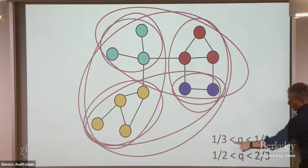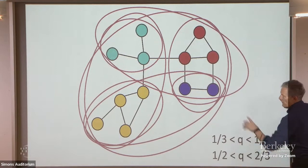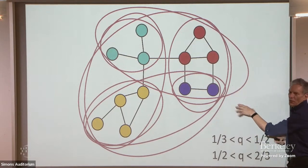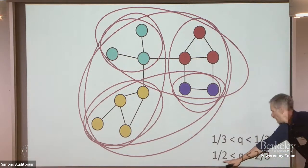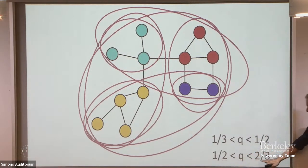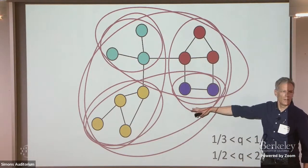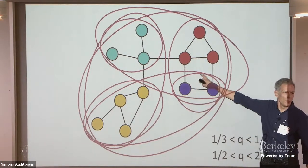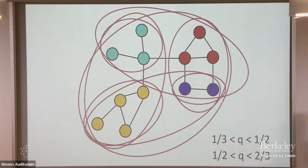For q equals 0.4, you get one set of communities. It turns out that for any q between one third and a half — right at a half, things can go haywire due to integer constraints — but between a third and two thirds, the equilibrium splitting of the graph will be the same.